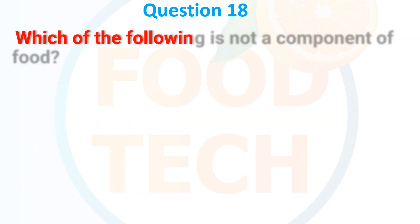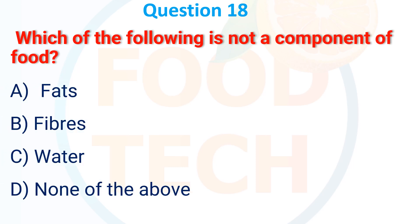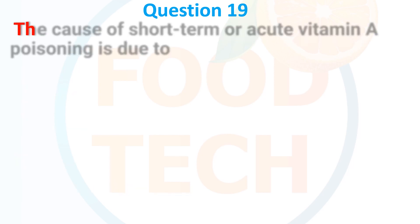Question 18. Which of the following is not a component of food? A. Fat. B. Fiber. C. Water. D. None of the above. The correct answer is: none of the above.